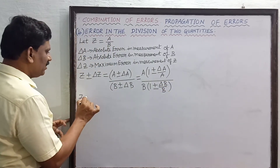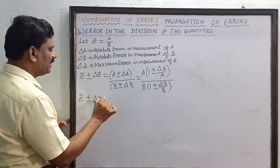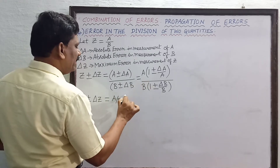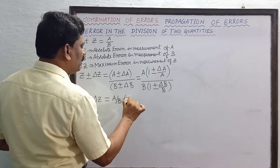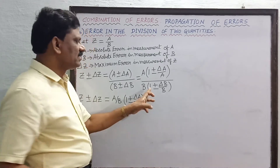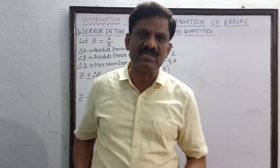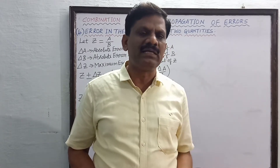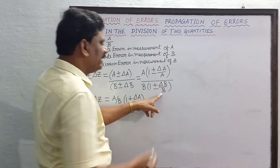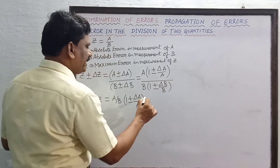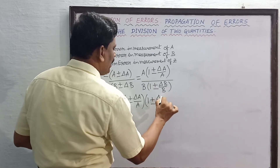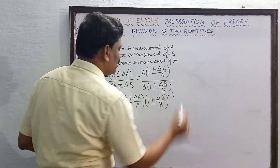So z plus or minus delta z on the left hand side is equal to a by b into 1 plus or minus delta a by a. Now this 1 plus or minus delta b by b is in the denominator. When I shift that to the numerator, its power will become minus 1 because it is a reciprocal term — I am bringing this term from the denominator to the numerator.